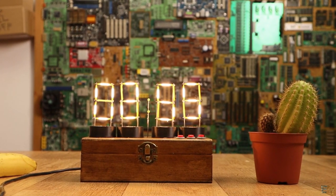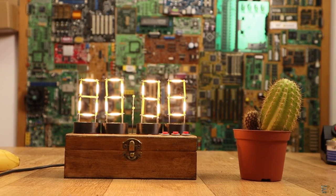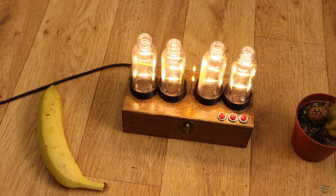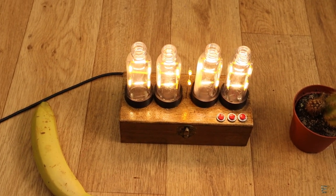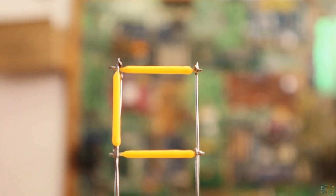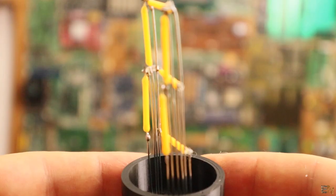This is a homemade clock that uses homemade 7-segment displays with a vintage look of Nixie tubes. I've made them using filament-shaped LEDs like these ones, soldered together using some solid wires.